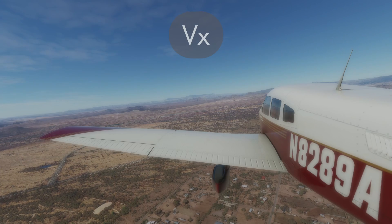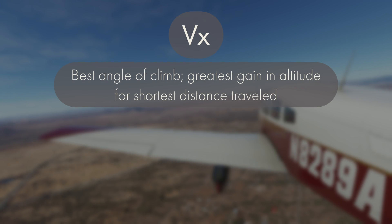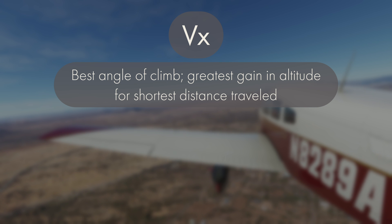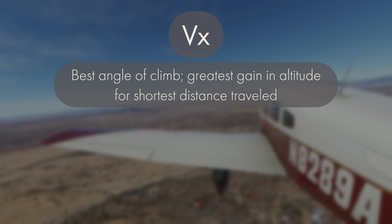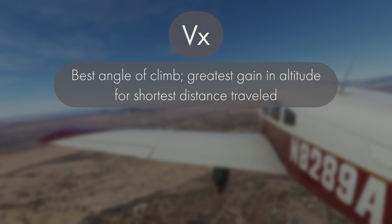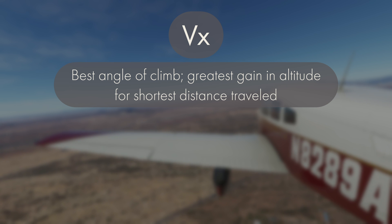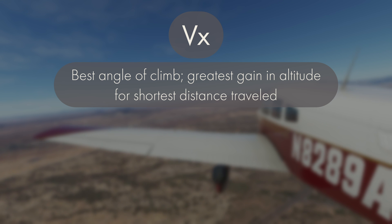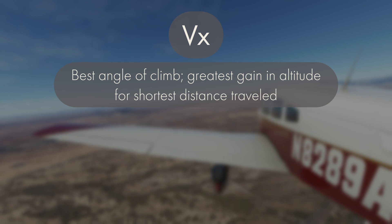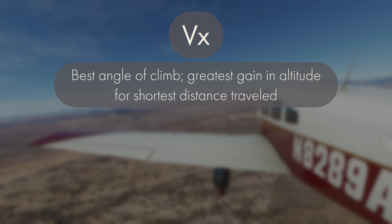Next we have VX, which is the best angle of climb. This one gets confused a lot with VY, so here's the main difference. VX, the best angle of climb, is the greatest gain in altitude in the shortest possible horizontal distance — meaning you climb the greatest altitude over a short distance, not time. For the PA-28, VX is 64 knots. VX comes into play when you're taking off over an object at the end of the runway.